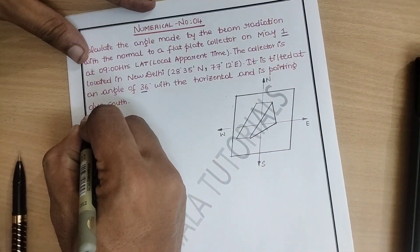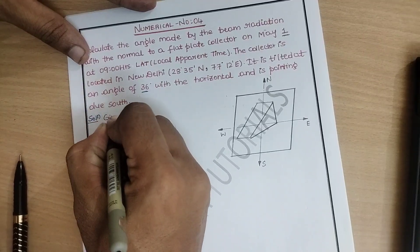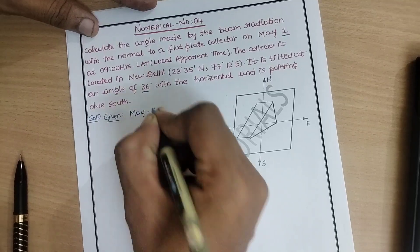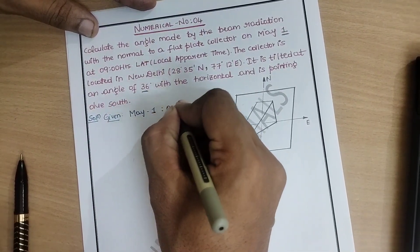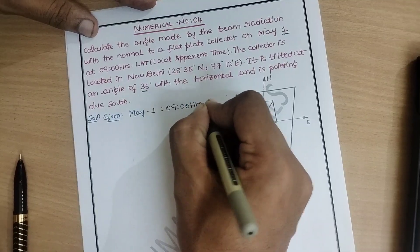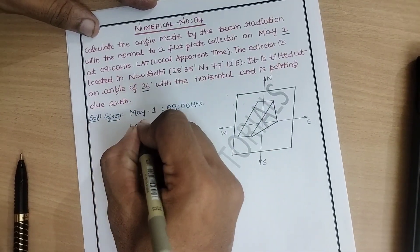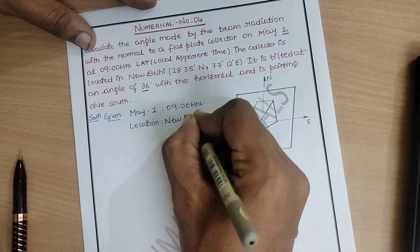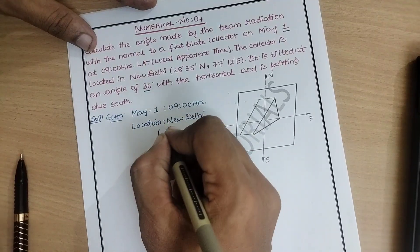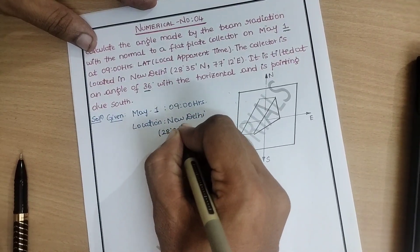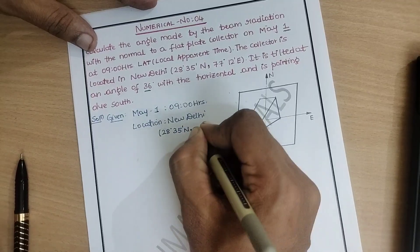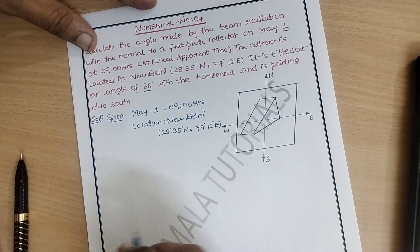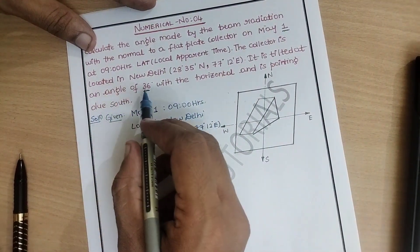Let us see what is given in the question one by one. The day is May 1st and the time is 9 hours. The location is New Delhi, with a latitude angle of 28 degrees 35 minutes north and 77 degrees 12 minutes east longitude, and the angle of inclination is 36 degrees.